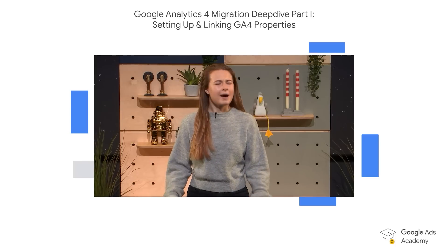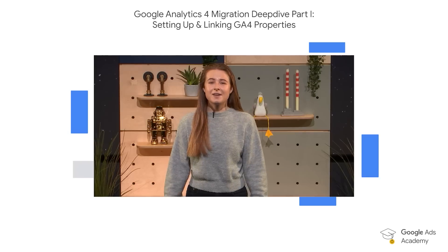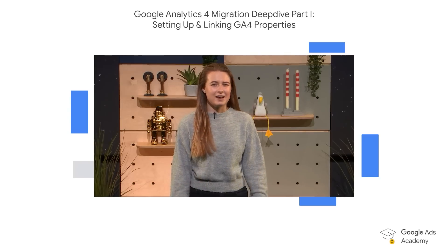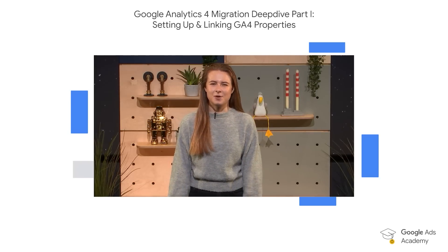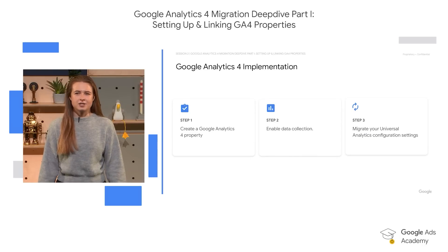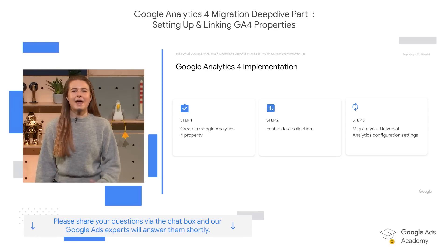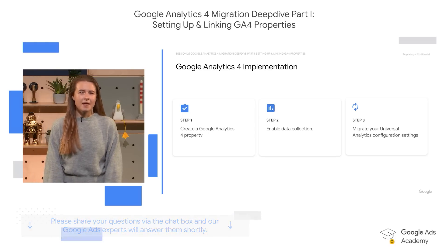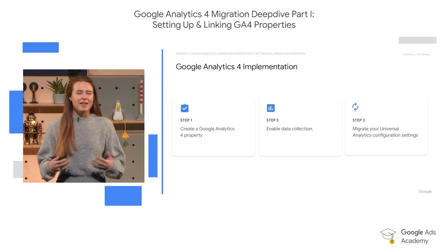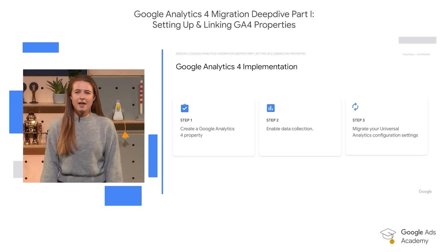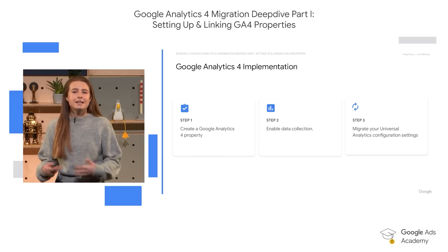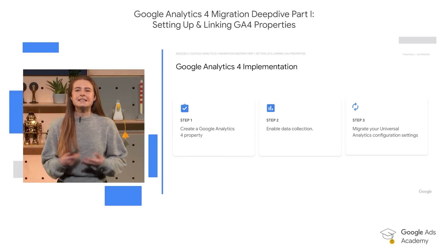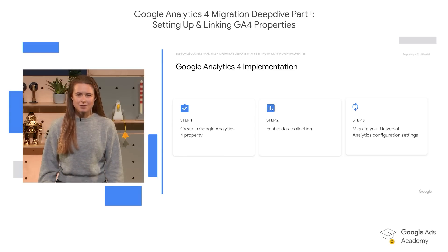I'm thrilled to be here today to be running this training on one of my favourite products, Google Analytics 4. We'll be diving into some step-by-step instructions as well as key watch-outs on setting up and linking Google Analytics 4 properties. Universal Analytics will begin its deprecation on July 1, 2023. After a period, you will no longer be able to receive reports or access Universal Analytics data. To avoid loss of data and gaps within your reporting, it's important to migrate to Google Analytics 4 as soon as possible.